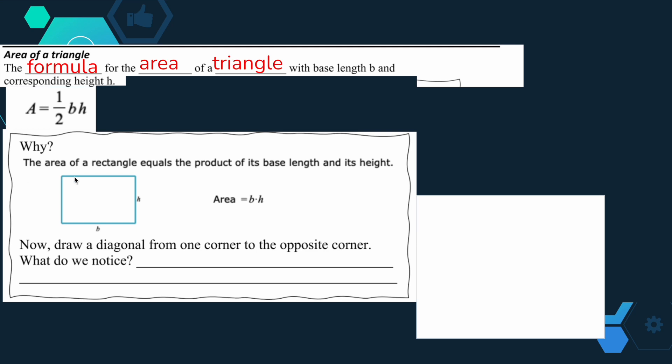Let's look at the why. The area of a rectangle equals the product of its base length and its height. That's another way we were just talking about that in the last one - length times width. You can also change that to base and height. A lot of the time we use base and height in these formulas.